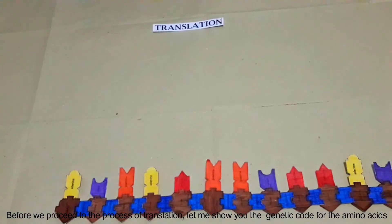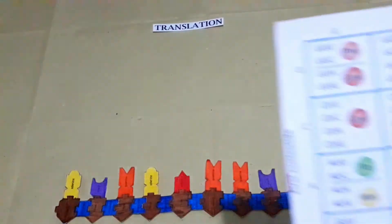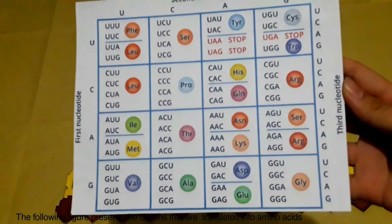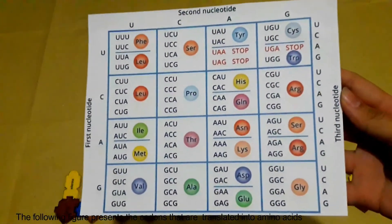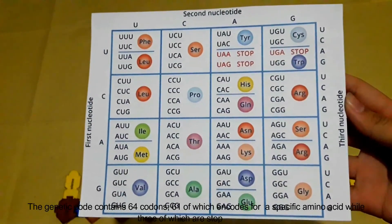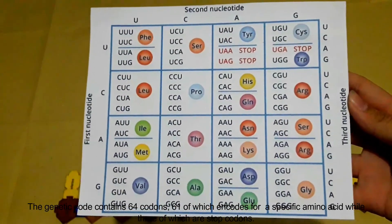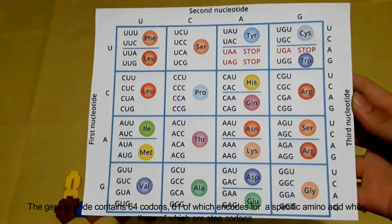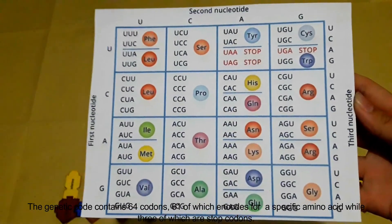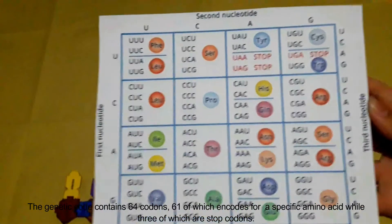Before proceeding to the process of translation, the genetic code for the amino acids is presented. The following figure shows the codons that are translated into amino acids. The genetic code contains 64 codons: 61 of which encode a specific amino acid, while three of which are stop codons.